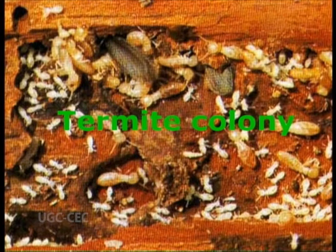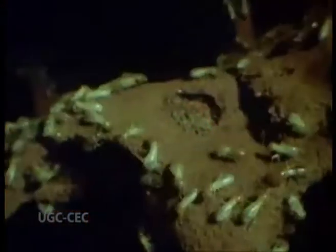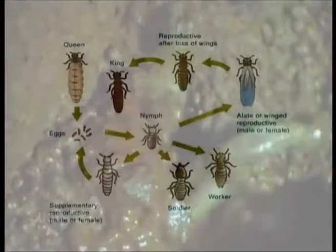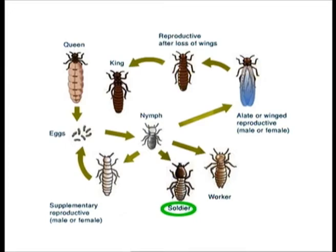Termite colony. Termites live in a nest or colony with hundreds, thousands, or even millions of siblings. The termite colony is really a large extended family within which are various groups of individuals having different functional roles in accordance with their caste system.